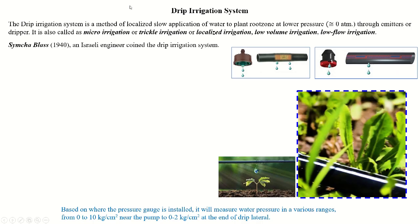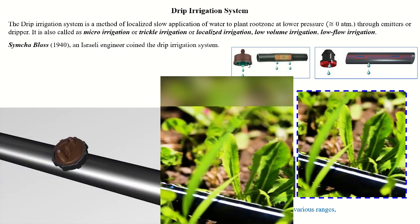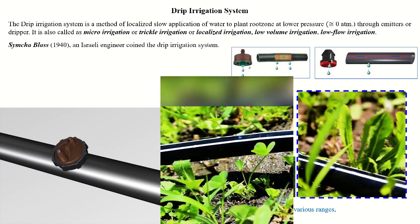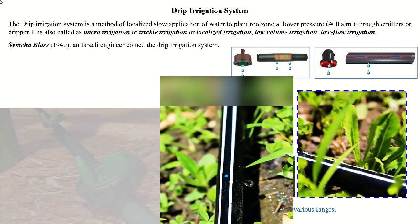In this session we are going to discuss about the drip irrigation system. In the last session we discussed about the sprinkler irrigation system, where water is applied from the nozzle in the form of rain drops. The drip irrigation system is a pressurized irrigation system where water is applied in a slow manner directly on the plant root at low pressure through emitters. In the sprinkler we use nozzles, but here we use emitters.